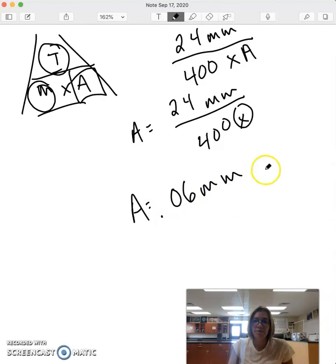But I asked for it in micrometers, so you're going to multiply that by 1,000. And so 0.06 times 1,000 is 60 micrometers.